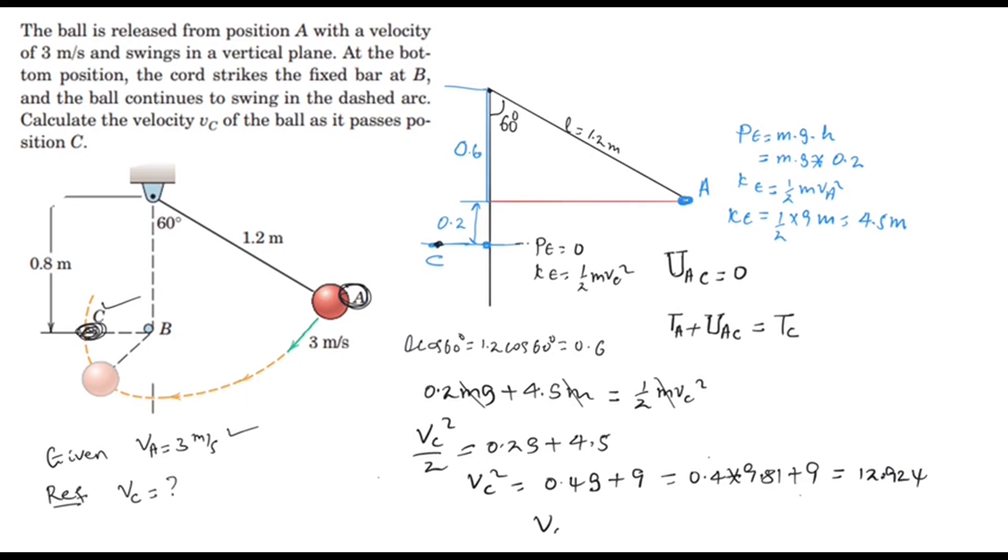If we put all these numerical values, we'll get 12.924. Under the radical, we get the velocity of C, which is the square root of 12.924. Finally, it will be 3.59 meters per second. This is our answer for the given question.